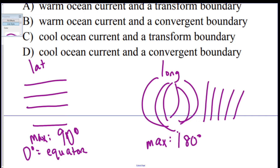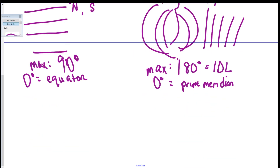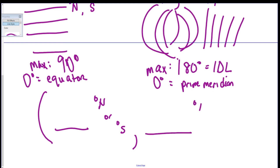Important lines: zero degrees latitude is the equator. 180 degrees longitude is the International Date Line. Zero degrees longitude is the Prime Meridian. Latitude measures degrees north and south; longitude measures degrees east and west. When writing a coordinate, latitude always comes first, then longitude.